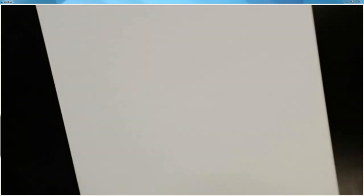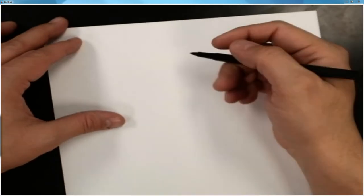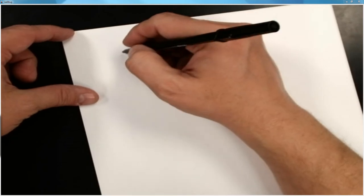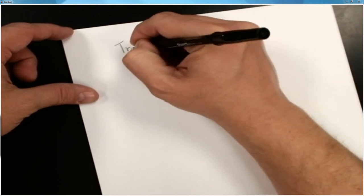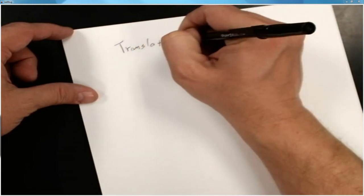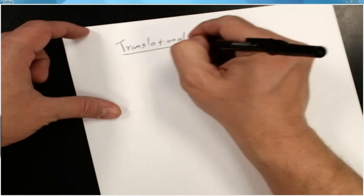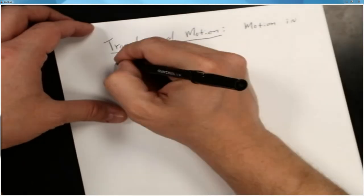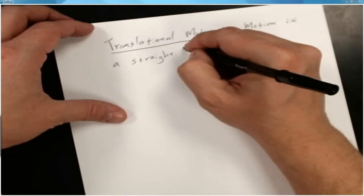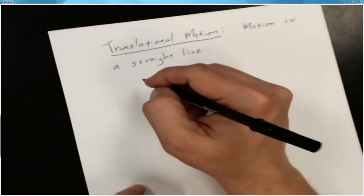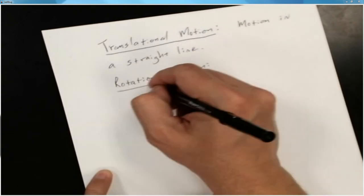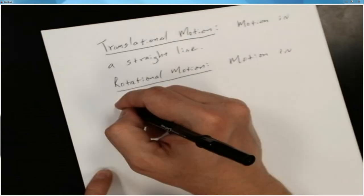As we've learned over the last several days, torque is a concept in rotational motion that is equivalent to force in straight-line motion. To be clear, there are two types of motion: translational motion, which is motion in a straight line, and rotational motion, which is motion in a circle.